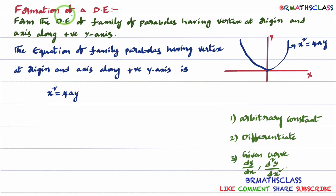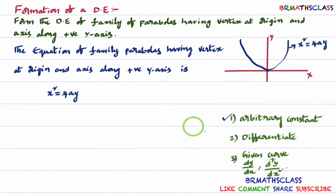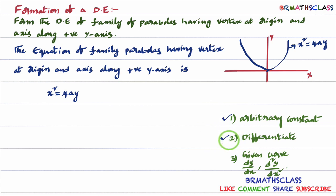The actual task is to form a differential equation. To form a differential equation, always remember three steps. First, identify the number of arbitrary constants present in the given equation — that many times we will differentiate. In the process of differentiation, we will try to eliminate arbitrary constants. After differentiation, if arbitrary constants are eliminated, it is well and good. Otherwise, we use step three: we use the given curve or the result after first differentiation to eliminate the arbitrary constants.